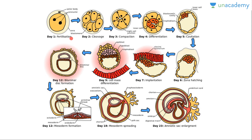On day one we have fertilization. Zygote formation takes place, which undergoes cleavage division and formation of blastomeres occurs. Then it undergoes compaction, then differentiation, and finally cavitation — in which the blastocoel, a fluid-filled cavity, is formed. Blastomeres differentiate into two layers: trophoblast and inner cell mass. Then zona pellucida ruptures, zona hatching occurs, and the embryo enlarges in size.